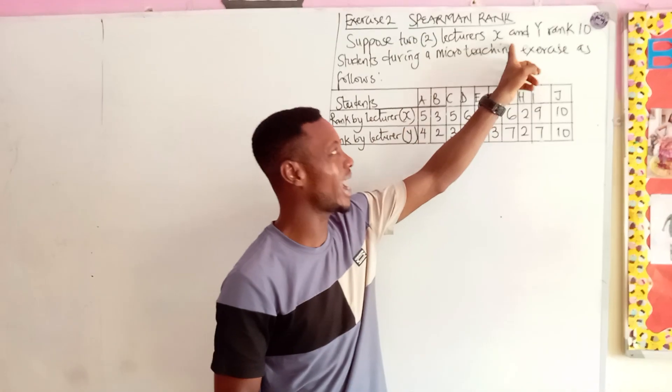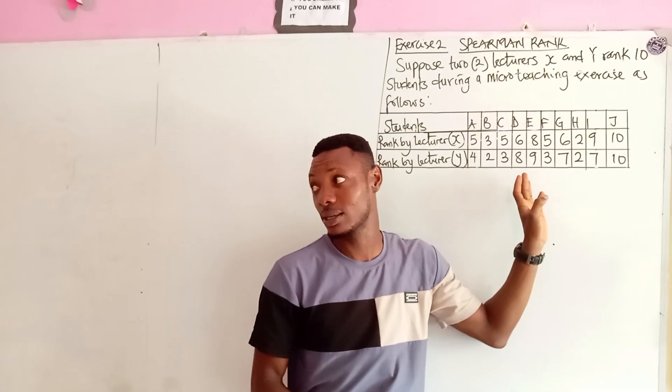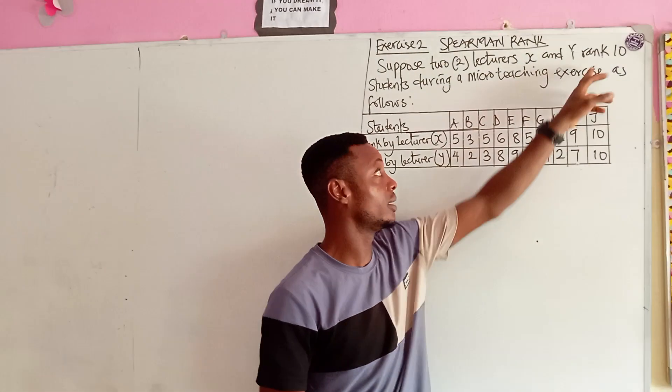It says, suppose two lecturers, X and Y, rank 10. Now, this shows us that this has already been ranked, so there's no point for you to rank it anymore. So it has already been ranked.